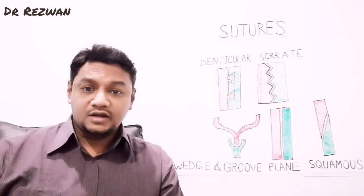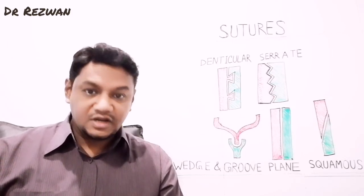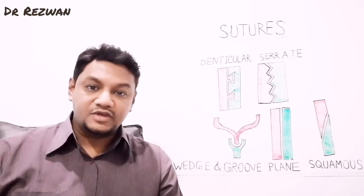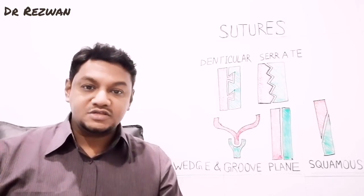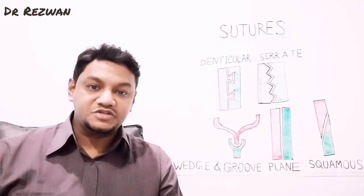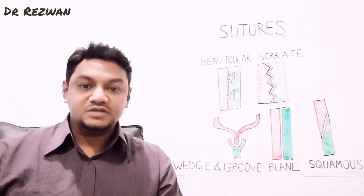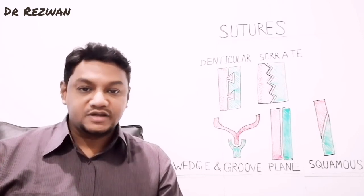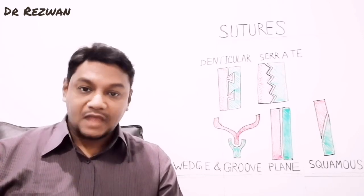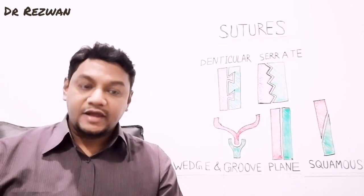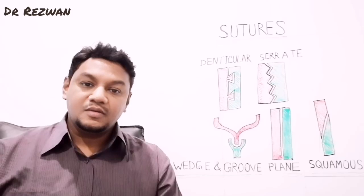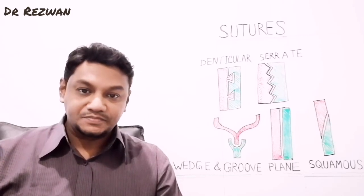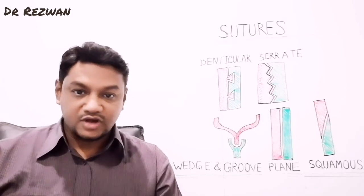As sutural joints are under fibrous joints, they are also under a type called synarthrosis. Synarthrosis means there will be no joint cavity, so most sutural joints do not have any cavity. If there is no cavity, there will be restriction of movement, and these joints are therefore very much fixed — like the sutural joints of our skull, which do not move. Most of these joints are formed by type 1 collagen fibers or fibrous tissues, which are the binding elements of the sutural joint.